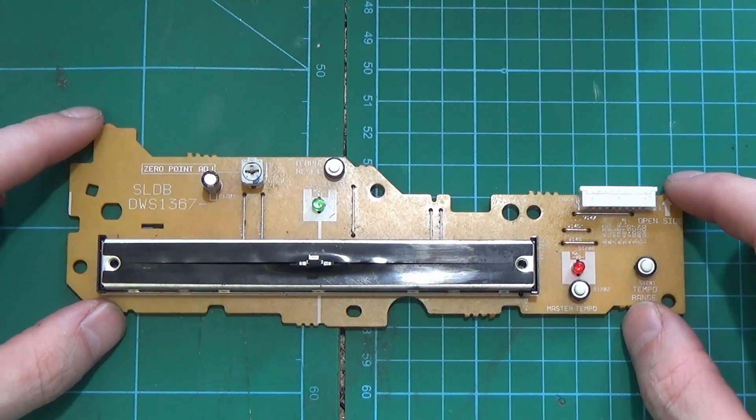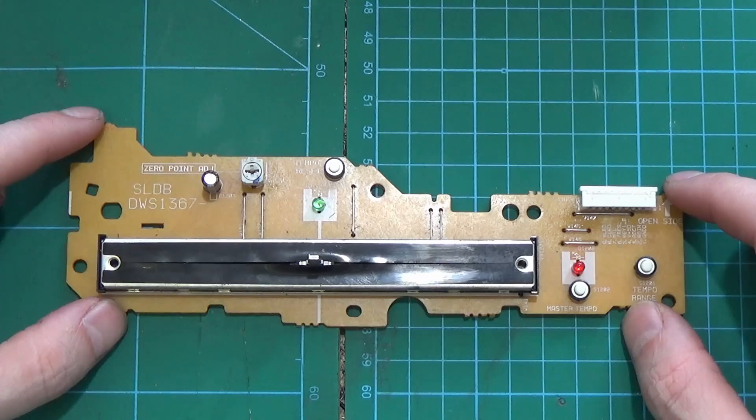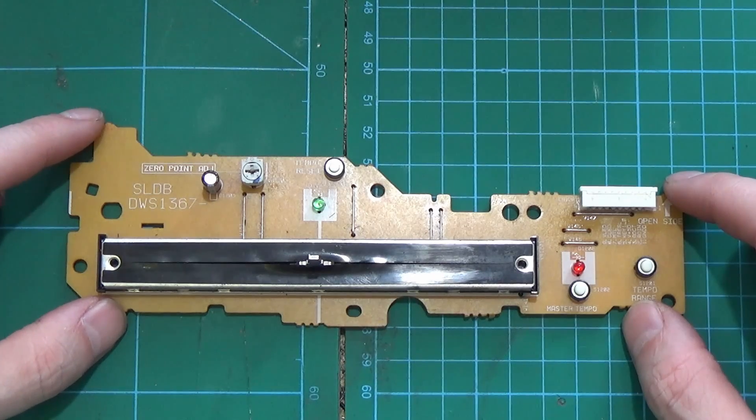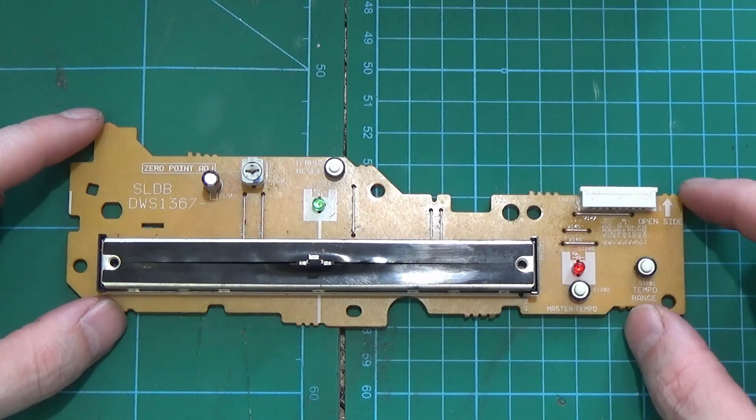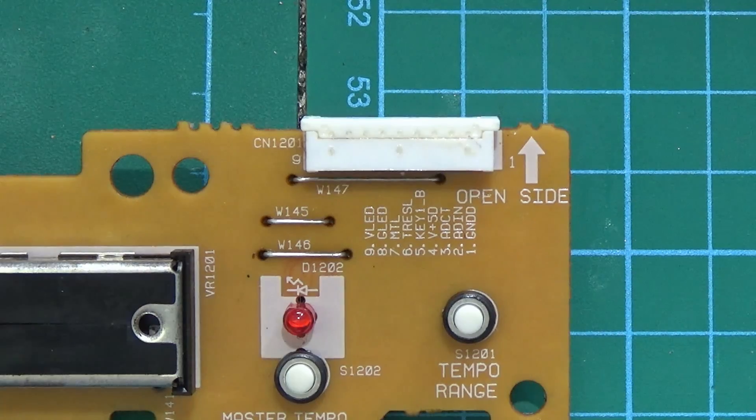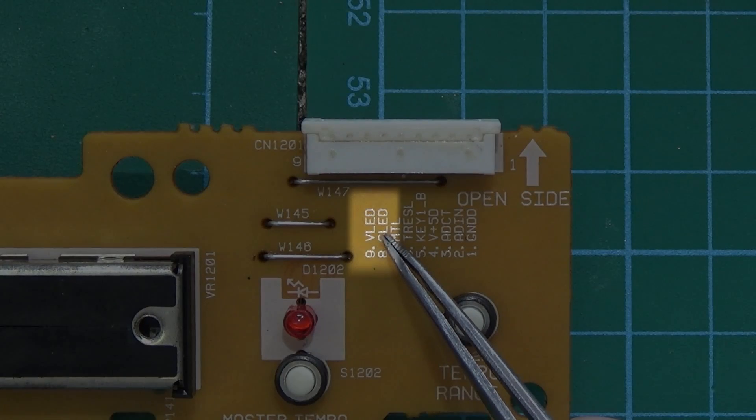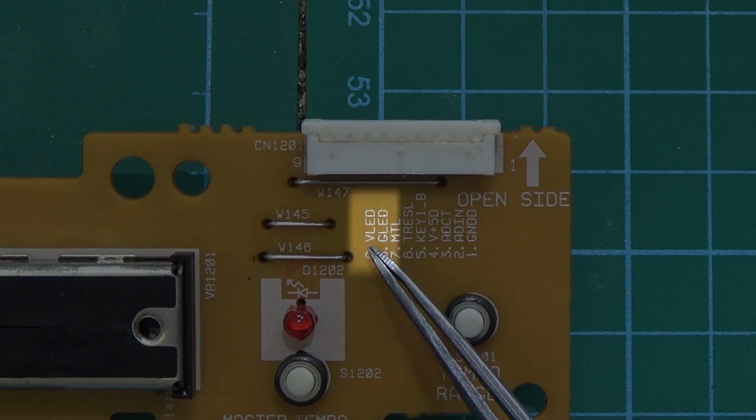Hello again, thank you for joining me in this next video. We are now looking at the SLDB board which controls the pitch and the tempo range. First we have V-LED and G-LED, which is the 12 volt and the 12 volt ground for the LEDs.